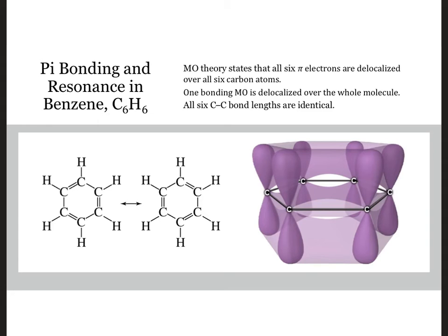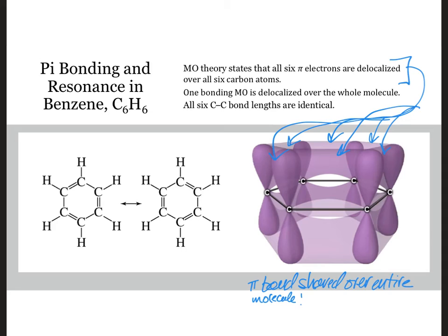MO theory describes those pi bonds as being shared or delocalized over all six carbon atoms resulting in carbon-carbon bonds that are all the same length, just as predicted by Lewis theory. These delocalized double bonds being shared over the entire benzene ring explain why benzene is far less reactive than typical double bond containing hydrocarbons.